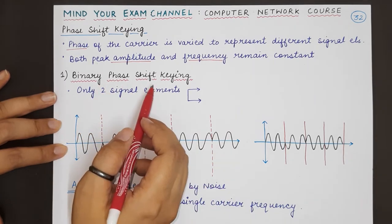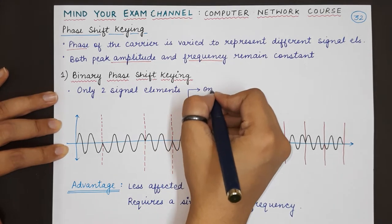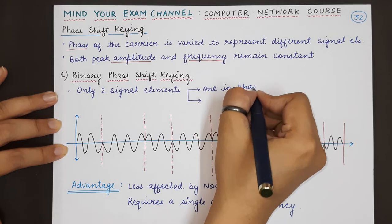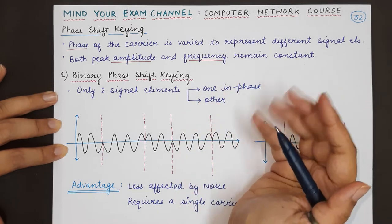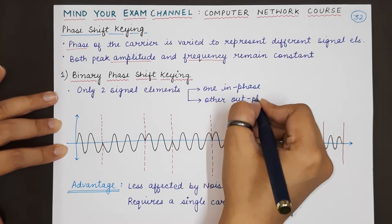In binary phase shift keying, there will be two types of signal elements. One signal element will be in phase and the other will be out of phase, which is also known as quadrature.